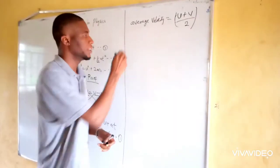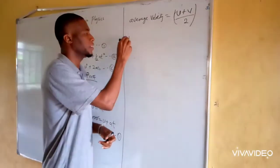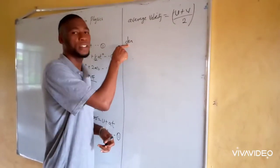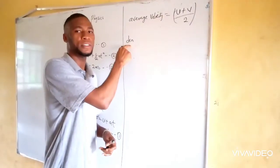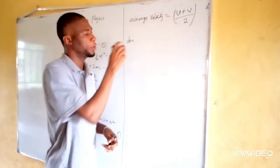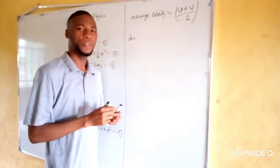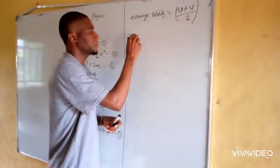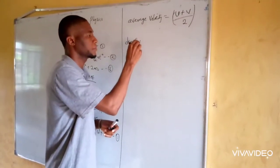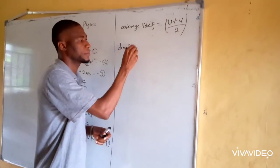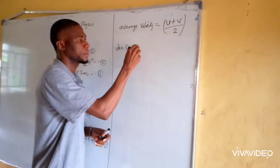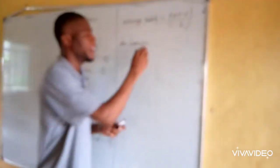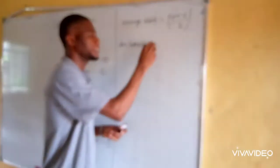We also know that distance covered — this is the distance — the distance covered is equal to average velocity times time.